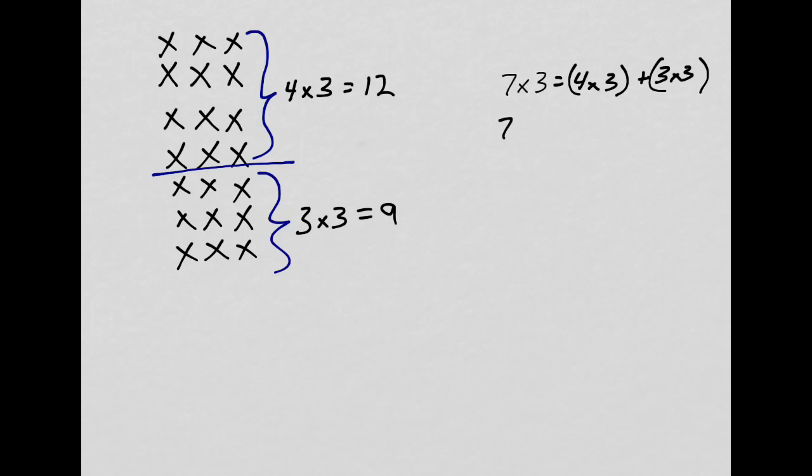So now I know that seven times three equals twelve, that's four times three, plus nine, that's three times three. And so that tells me that seven times three equals twenty-one. This is a very special property called the distributive property, and we can use it with any sort of multiplication problem where we're using an array like this. It's very helpful when we're dealing with complex numbers or numbers that are hard to multiply like sevens.